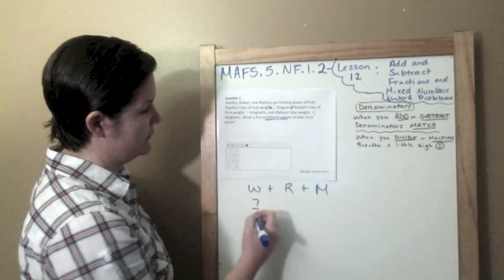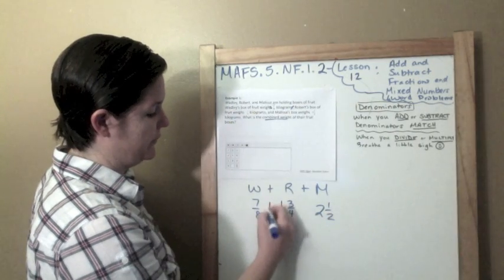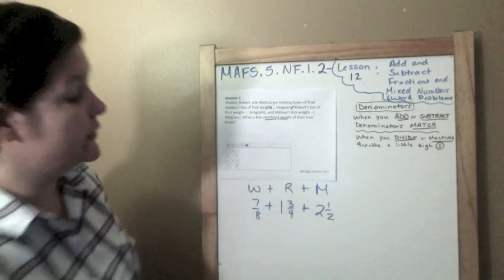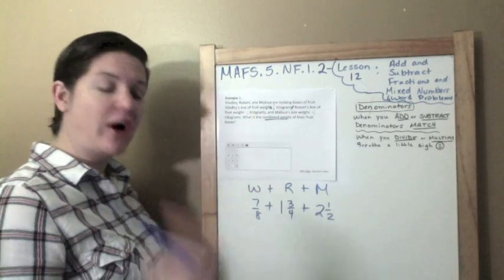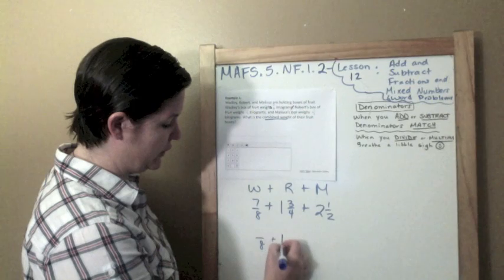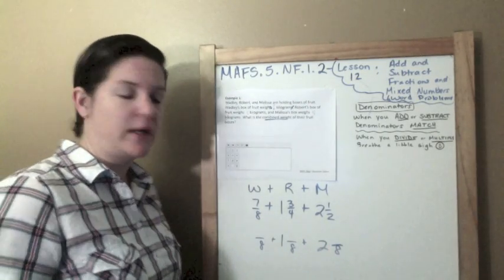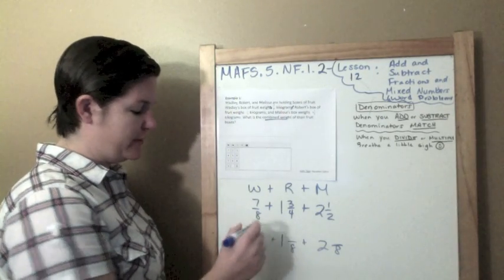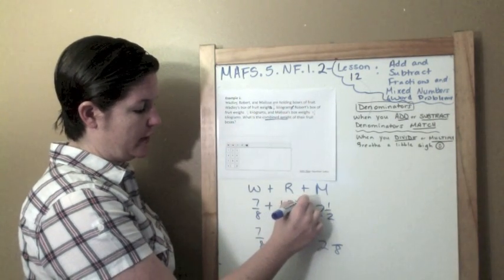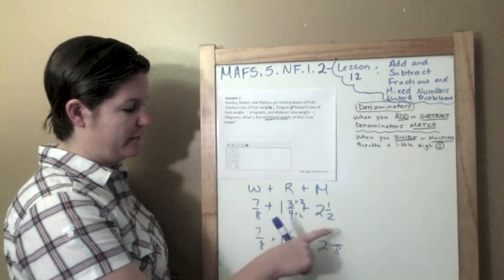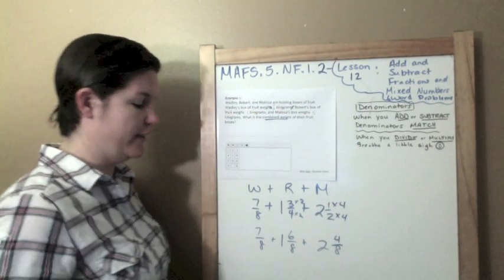So we have Wade Lee's box plus Robert's box plus Melissa's box. Wade Lee's box is 7/8 kilograms, 1 and 3/4, and 2 and 1/2. Now, when you add or subtract, your denominators match. But mine don't. I need to fix them. And I know that 8, 4, and 2 have a common denominator of 8. So, I'm going to rewrite all of these fractions with a common denominator of 8. 7/8 I did nothing to change it, so that can stay 7/8. Here, I did 4 times 2 to get 8, so 3 times 2 would be 6. And here, 2 times 4 got me my 8, so 1 times 4 gets me 4/8. And now I can add them.